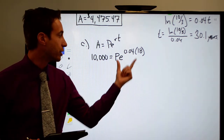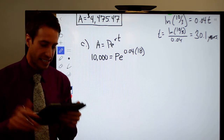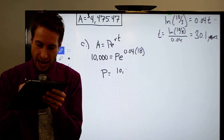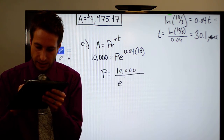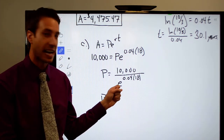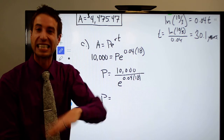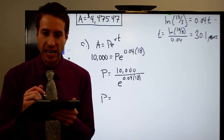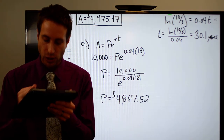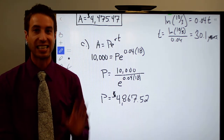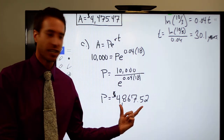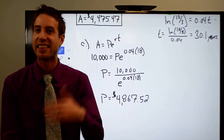To isolate P, divide both sides by e^(0.04 × 18). So P = 10,000 / e^(0.04 × 18). Using a calculator — compute e raised to the 0.04 times 18 power, then divide 10,000 by that result — we get four thousand eight hundred sixty-seven dollars and fifty-two cents. Angelina needs to go back to grams and grams and ask them to invest about four thousand eight hundred sixty-seven dollars.